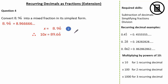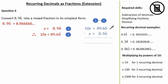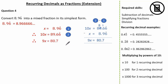Now identifying equation 1 and equation 2, let's subtract. 89.66 recurring subtract 8.96 recurring — you can see the 6 recurring cancels out. 6 subtract 9, well we can't do, so let's borrow from the 9, giving 16 subtract 9 to give 7. 8 subtract 8 is nothing, and 8 subtract 0 is 8. Therefore, we know 9x is equal to 80.7.